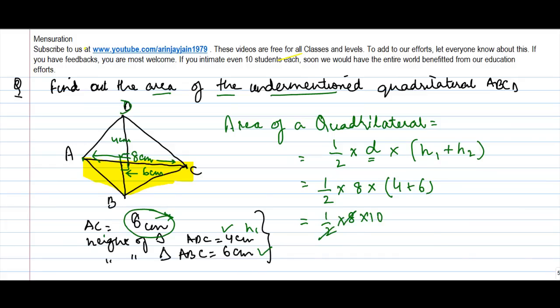2 goes into 8 four times, 4 into 10 gives us 40 centimeter square. So the area of this quadrilateral ABCD is equal to 40 centimeter square.